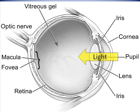In a normal eye, light passes through the cornea, pupil, and lens on its way to the back of the eye. In the middle, hollow part of the eye is a clear jelly-like substance called the vitreous.